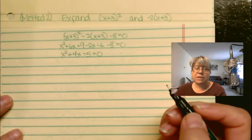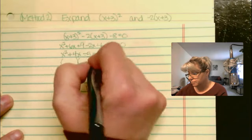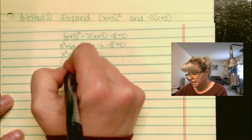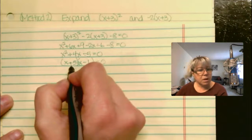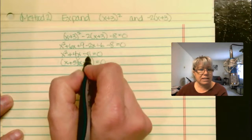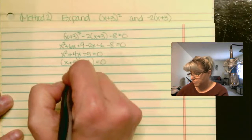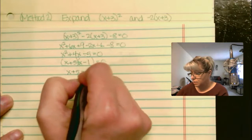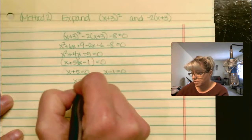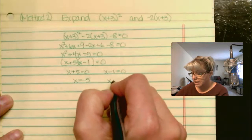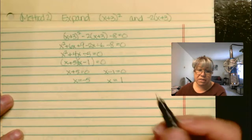Now that I have the left-hand side simplified, I'm going to factor. We get x plus 5 and x minus 1. Positive 5 times negative 1 is negative 5, and positive 5 minus 1 is positive 4. Let's solve: x plus 5 equals 0 and x minus 1 equals 0, therefore our solutions are x equals negative 5 and x equals 1. Same solutions — just two different methods of solving.